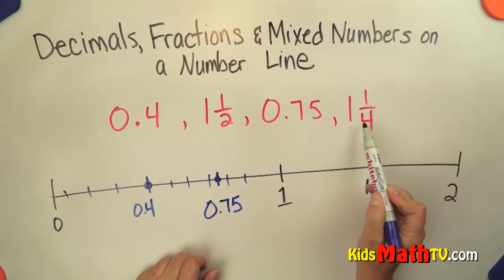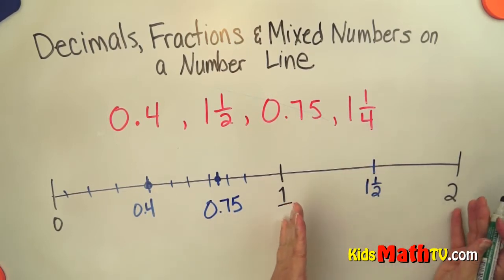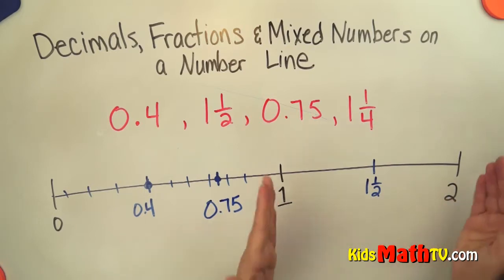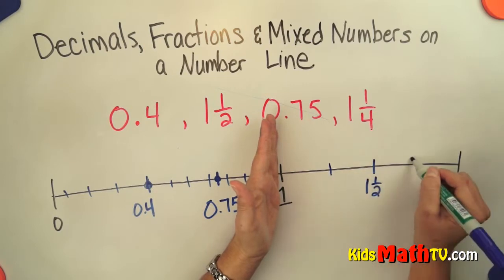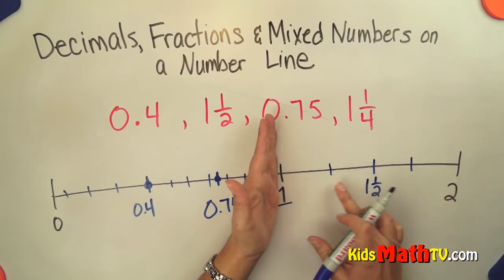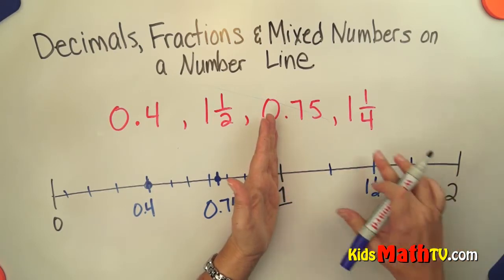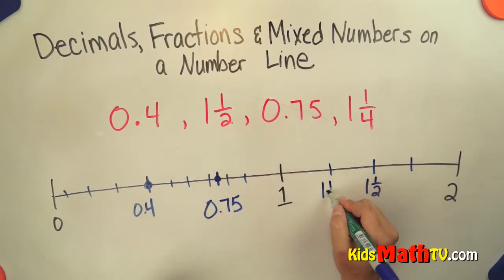Then I have 1 and ¼. 1 and ¼ is between 1 and 2. So if I were to split this part between 1 and 2 up into 4 parts, there would be ¼, 2⁄4, 3⁄4, and 4⁄4. 1 and ¼ is right here.